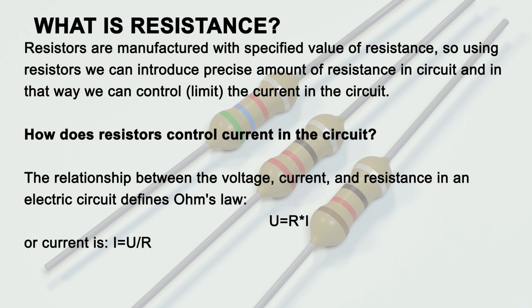How do resistors control current in a circuit? The relationship between voltage, current, and resistance in an electric circuit is defined by Ohm's law: U equals I times R, or current I equals U divided by R.